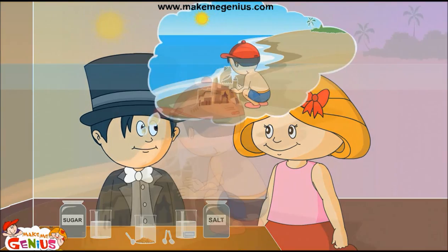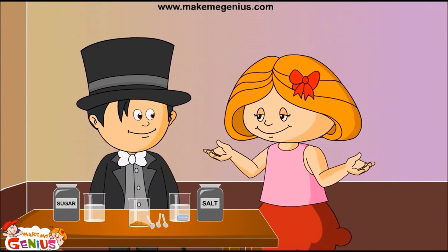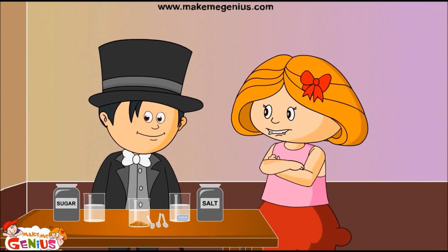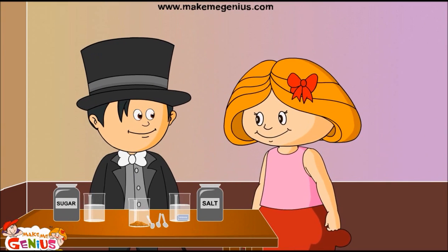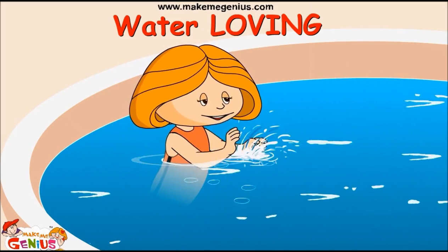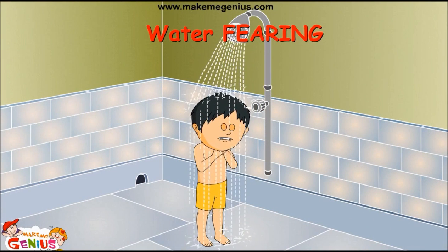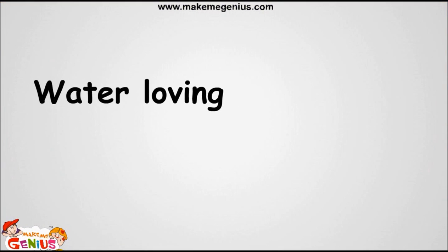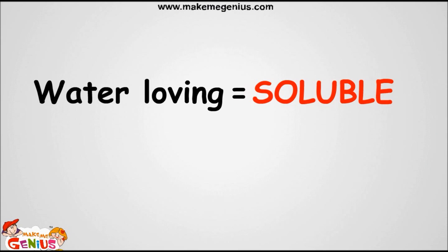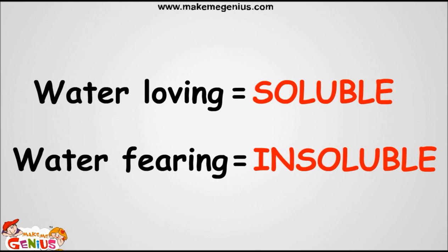Because not all solutes will mix with the solvents. When I make sand castles on the beach, the wave comes and the sand from my castle mixes with it — but that does not mean sand dissolves in water; the waves just wash it away. Solutes can be different: some are water-loving and will mix in water very fast, but others are water-fearing. If the solute is water-loving and it dissolves, then it is soluble — like salt and sugar. But if the solute is water-fearing and does not dissolve, then it is insoluble, like sand.